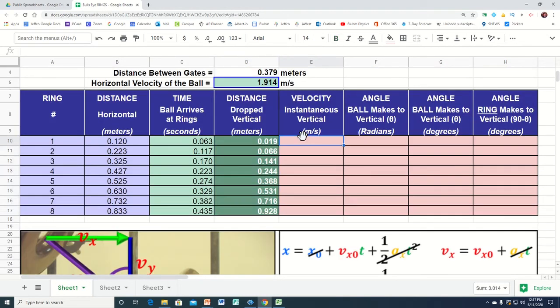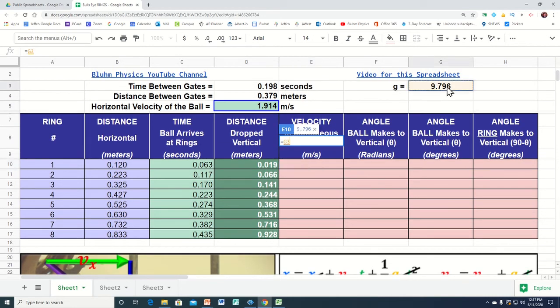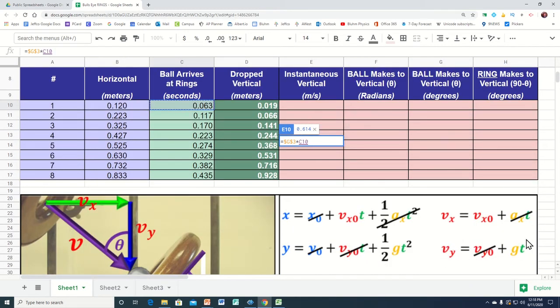The velocity vertical is just going to equal this acceleration, with dollar signs, times time. This was the time that arrived. And that's what I'm doing here. Just the velocity in the vertical direction is acceleration times time. I hit enter, and that's how fast it's going to be traveling in the down direction when it hits that first ring. Copy my formula down, and that's how fast it's going to be traveling in the down direction when it hits that last ring.